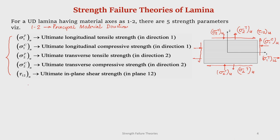How do we get these? We take a lamina, load it in a UTM, and draw the stress-strain curve till failure. At the failure point, this is sigma_1Tu, and the corresponding strain at failure is epsilon_1Tu. The slope of this curve is E1 because the lamina is loaded along direction 1.